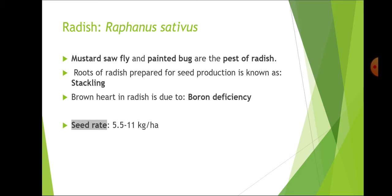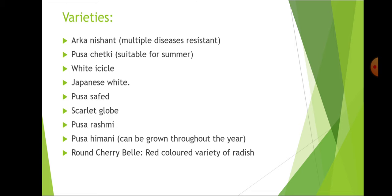Brown heart in radish is due to boron deficiency. Seed rate of radish is 5.5 to 11 kg per hectare.